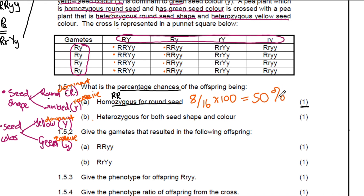For one mark, you don't need to show your calculation or working out. They could have been specific in this question and said homozygous for round seeds or even included both traits — say homozygous for round seeds and having green seeds in terms of color. So they've just asked about the shape of the seed only, but they can ask about literally any of the traits, or even combine both traits.